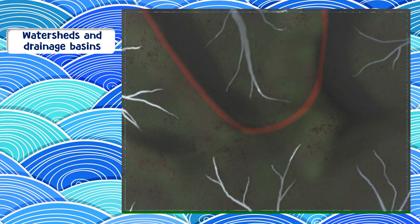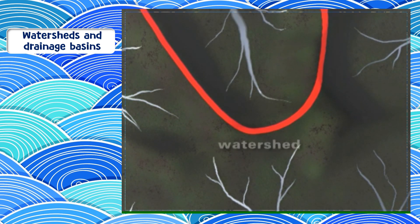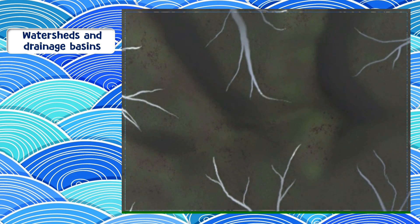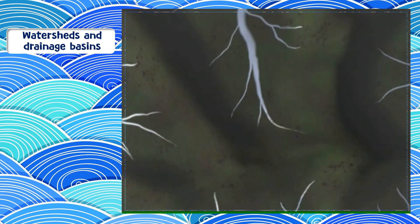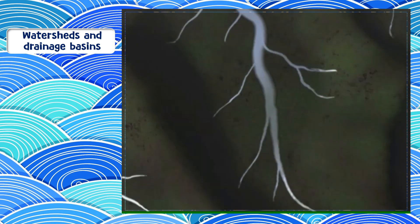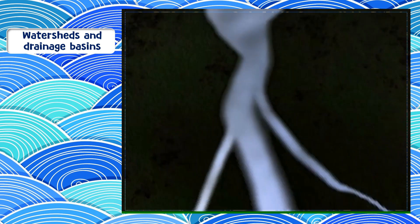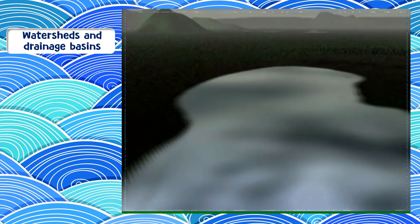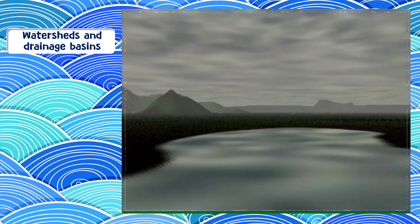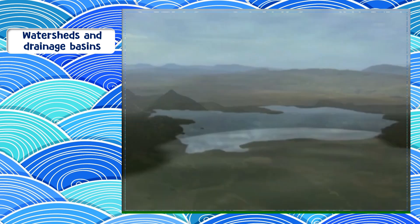The ridges in the mountains form watersheds. These watersheds are the dividing lines of the mountain ranges. The water will flow either side of the watersheds to collect in drainage basins. The drainage basin is the area in which all the waters that feed the river collect.